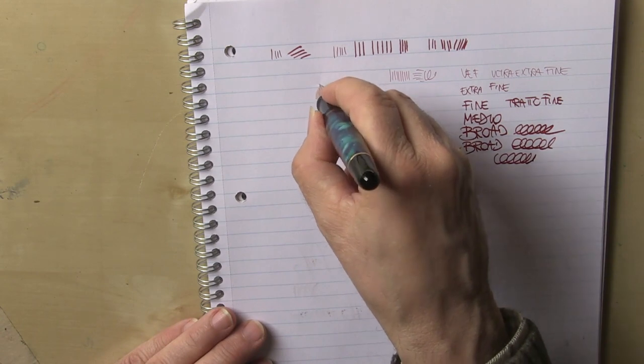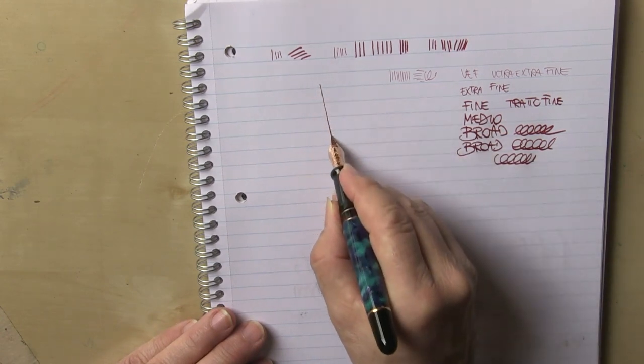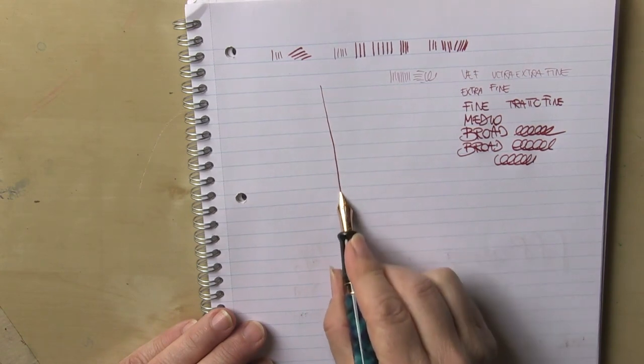In fact, due to the construction of the nib, it becomes possible to vary the stroke.